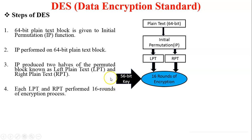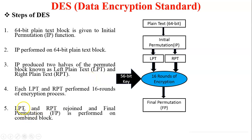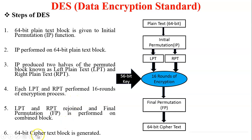The 56-bit resultant key is also another input to the 16 rounds of encryption. LPT and RPT rejoin and final permutation FP is performed on the combined block. Finally, a 64-bit ciphertext block is generated. These are the 6 steps performed to generate ciphertext from the given plain text.